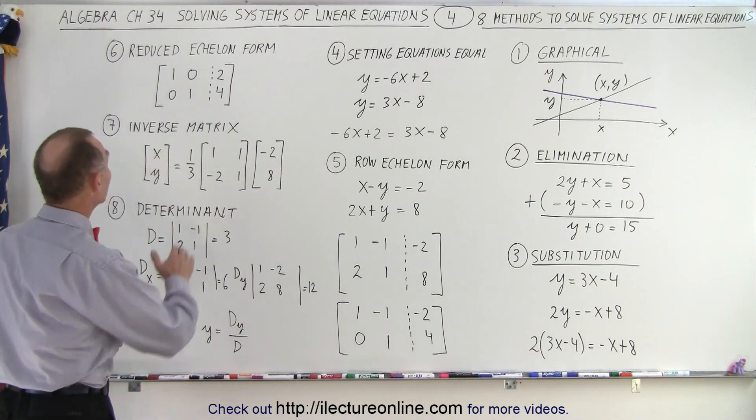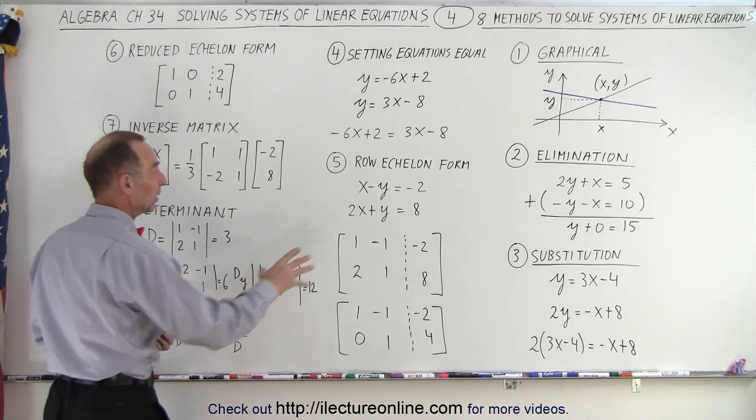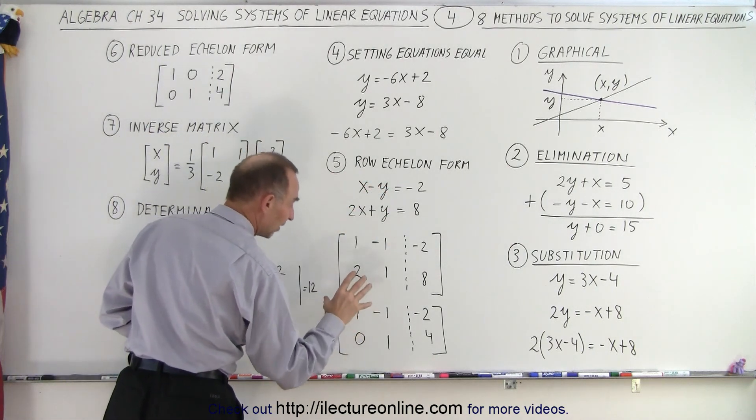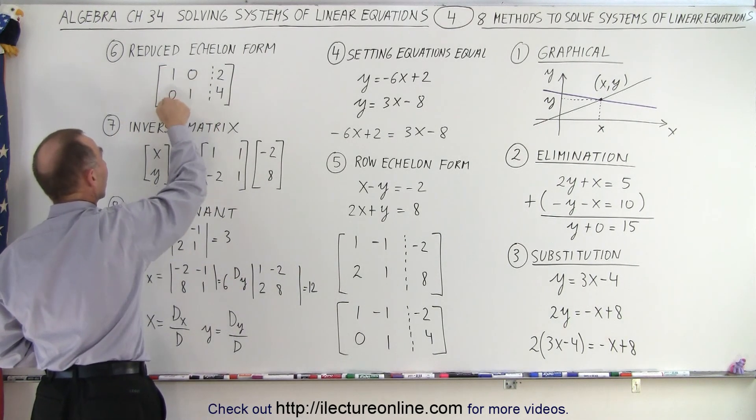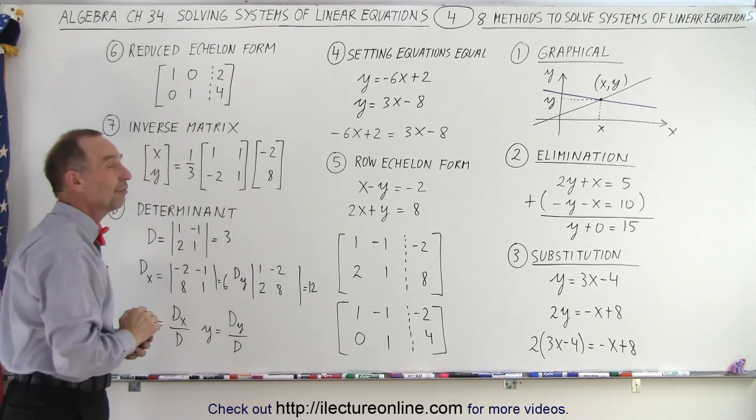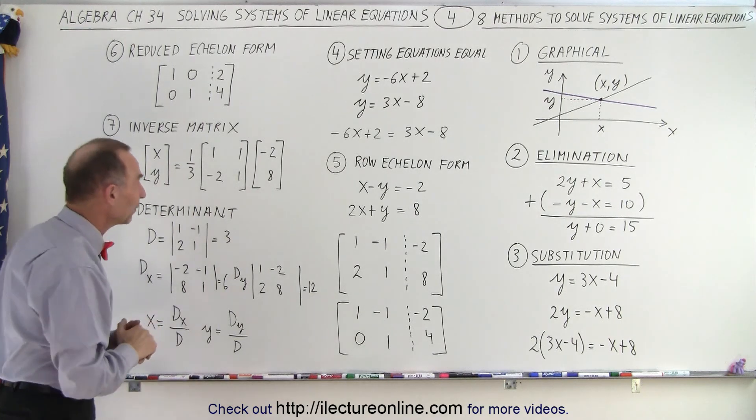Or we can take the reduced echelon form. We take the same two equations, but instead of stopping here, we go all the way where we have ones across and zeros over here. And then we can read off the value for x and y from that.